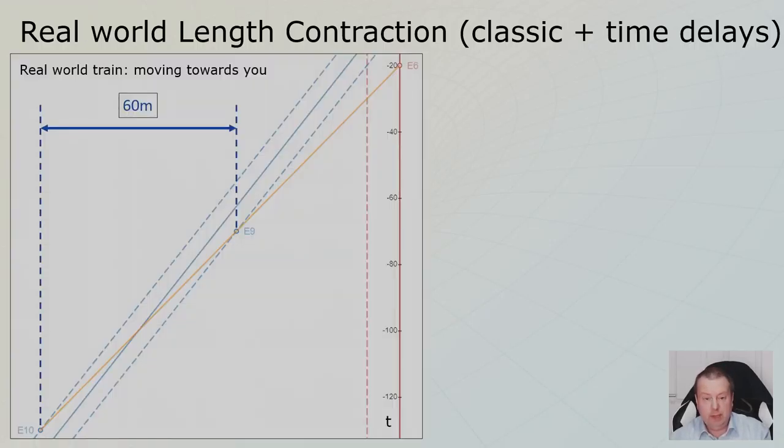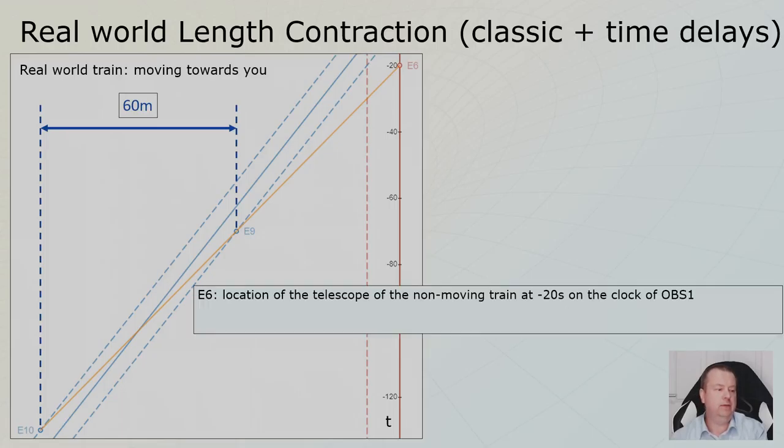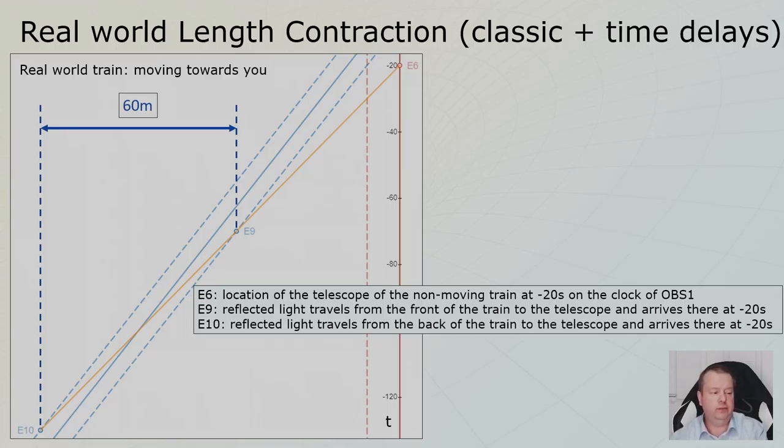The train coming at you appear to be much bigger. Why is that? Well, let's look at a train coming at you instead of moving away from you. Now I picked event number six. This is when the clock in the non-moving train is minus 20 seconds. Again, I put down a projection line 45 degrees and I intersect it with the guidelines of the front and the back of the train giving me event number nine and event number 10. Event number six is the telescope at minus 20. Event number nine is the front of the train where light starts to travel back to the telescope. And event number 10 is where light from the back of the train starts traveling to my telescope. And if these arrive at the same time in event number six, I will see the locations of event number nine and 10.